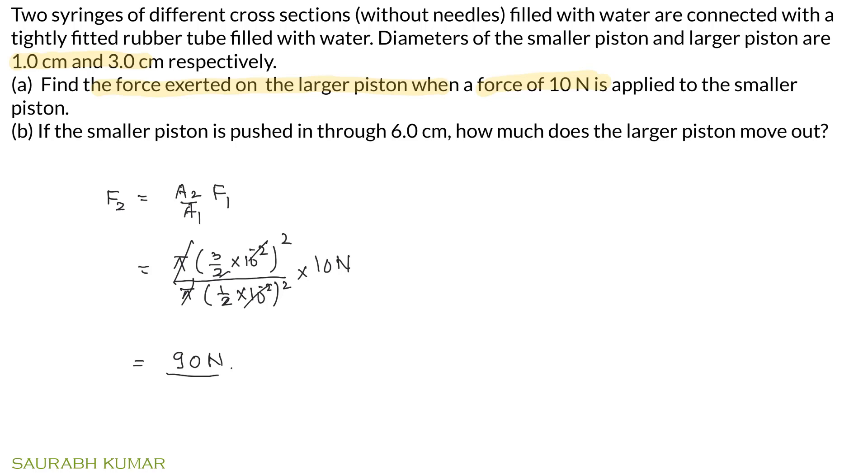Part (b): If the smaller piston is pushed in through 6 cm, how much does the larger piston move out? As water is incompressible, volume remains unchanged. So the area of cross-section of the input side A1 times displacement L1 must equal A2 times L2. Therefore L2 equals A1/A2 times L1. Put numerical values: π times (1/2 times 10⁻²)² divided by π times (3/2 times 10⁻²)² times 6 cm. This simplifies to 0.67 cm.